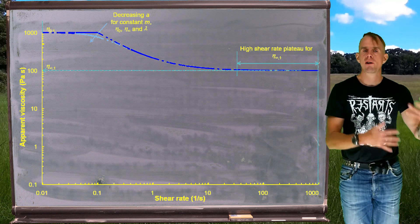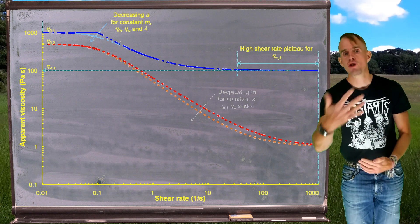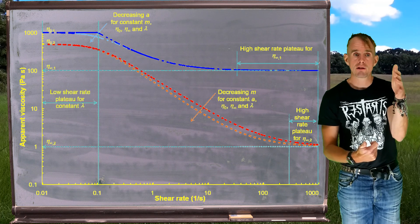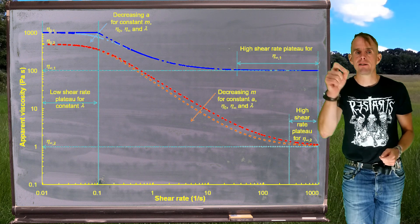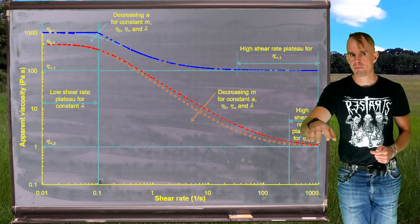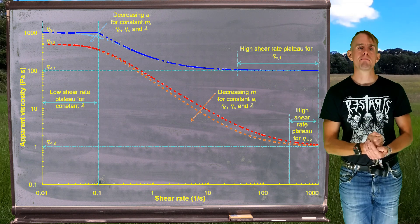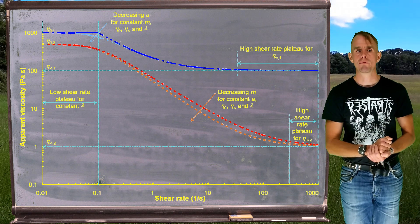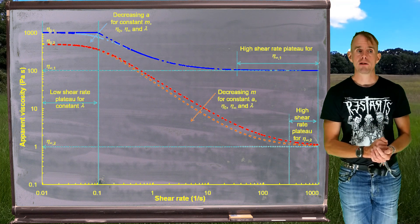OK, let's change our values of eta zero and eta infinity so we can superimpose another plot on this set of axes. So I'm reducing eta zero and I'm reducing eta infinity. And what I'm now doing is holding my transition parameter a constant, and I'm manipulating m, that other power law index. And what I see if I decrease m is I change how the fluid approaches the high shear rate Newtonian plateau. And as I decrease m, we get a more marked transition from the shear thinning region into the high shear rate plateau region.